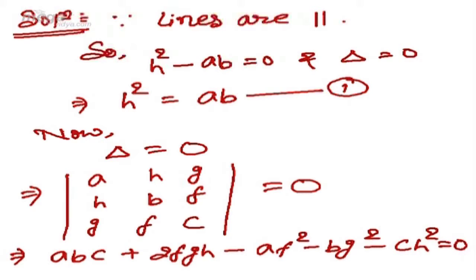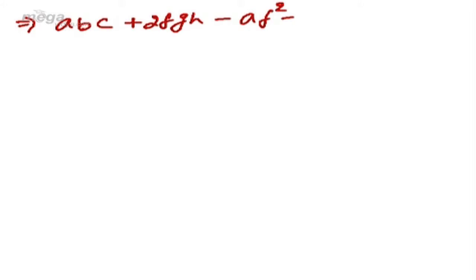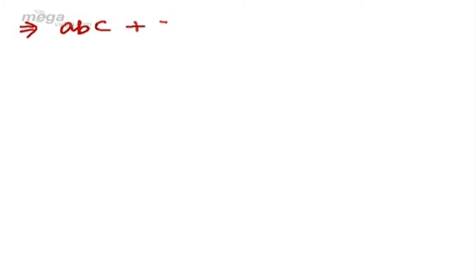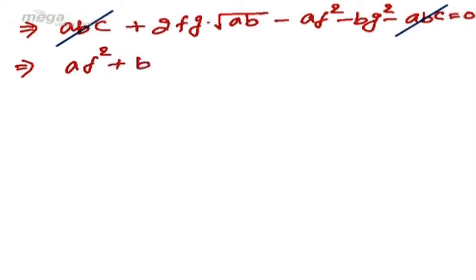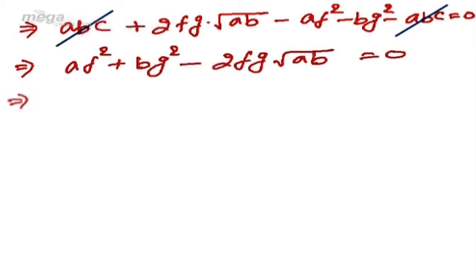Substituting h² = ab, the equation becomes: abc + 2fg·√(ab) - af² - bg² - c·ab = 0. The two abc terms cancel, leaving: af² + bg² - 2fg·√(ab) = 0.